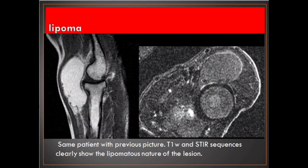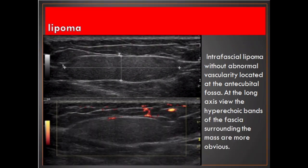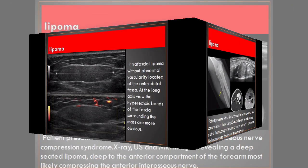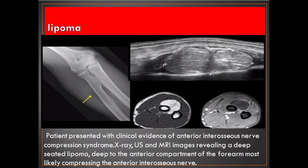Same patient as previous picture. T1W and STIR sequences clearly show the lipomatous nature of the lesion. This is an intrafascial lipoma without abnormal vascularity located at the antecubital fossa. At the long axis view the hyperechoic bands of the fascia surrounding the mass are more obvious. A patient presented with clinical evidence of anterior interosseous nerve compression syndrome; X-ray, US and MRI images revealing a deep-seated lipoma deep to the anterior compartment of the forearm, most likely compressing the anterior interosseous nerve.